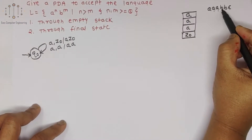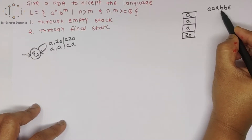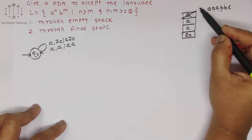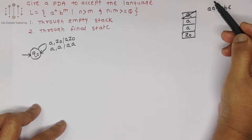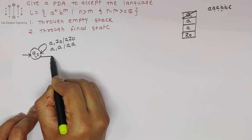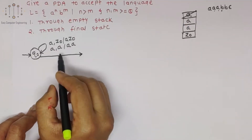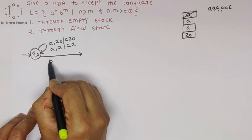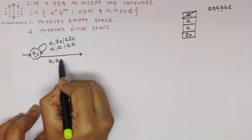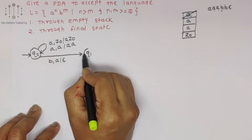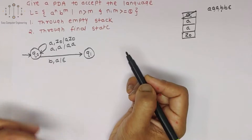For the next b, incoming character is b and in stack there is a, so we pop it. For the pop operation, we change the transition from q0 to q1. So from q0 we go to a new state q1: incoming symbol is b, stack has a, pop it.